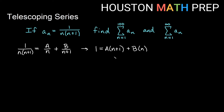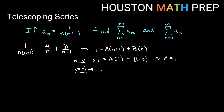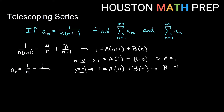Solving for A and B: first, let n equal 0. That gives us 1 equals A times 1 plus B times 0, so A equals 1. Since the other factor is n plus 1, let n equal negative 1. That gives 1 equals A times 0 plus B times negative 1, so B equals negative 1. Based on A equals 1 and B equals negative 1, our partial fraction decomposition for 1 over n times n plus 1 is 1 over n minus 1 over n plus 1.